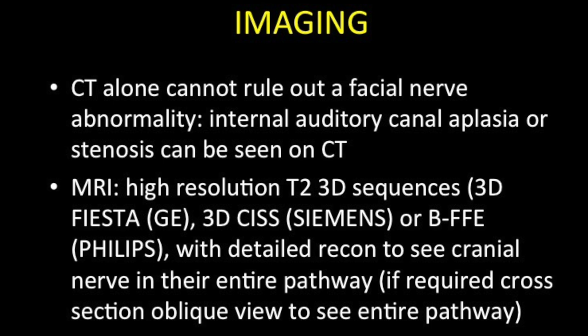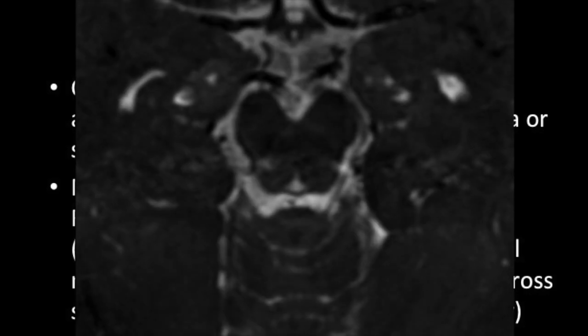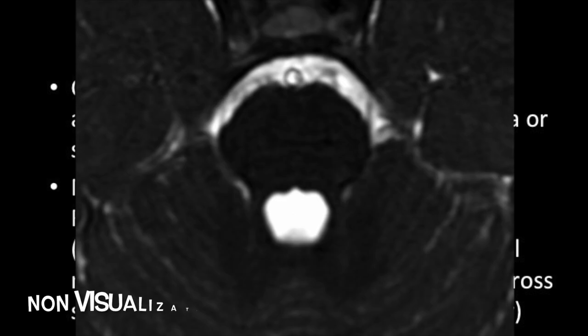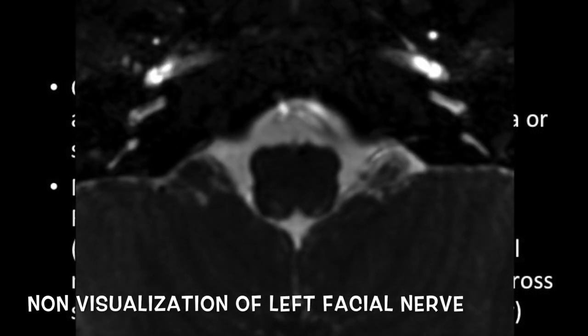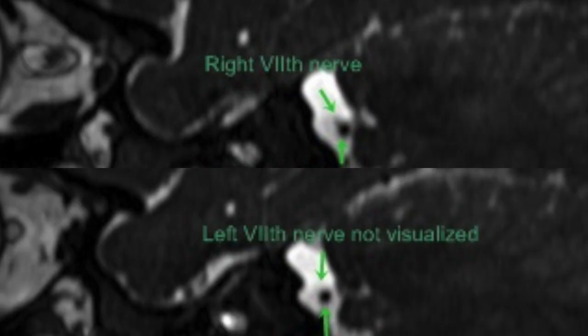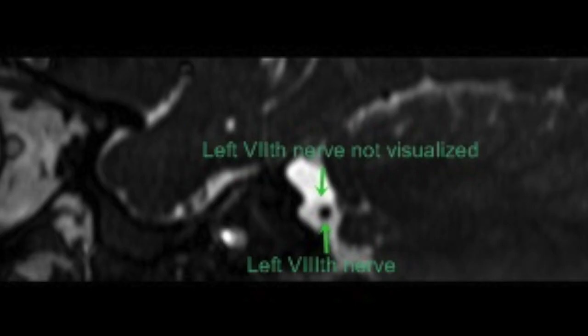Regarding imaging findings: the facial nerve itself is not visualized on CT. However, developmental abnormalities of the facial canal such as hypoplasia or aplasia can be seen, provided thin sections of the temporal bone are obtained. On MRI, it is essential to acquire 3D gradient echo sequences to image the 7th and 8th nerves within the cistern as well as the canal. Absence of the facial nerve must be demonstrated within the canalicular or cisternal segment.